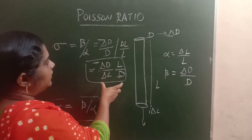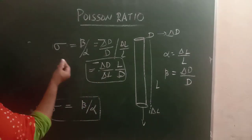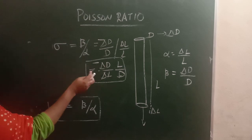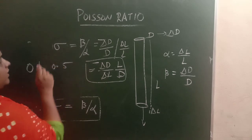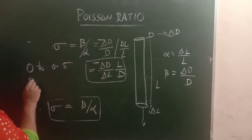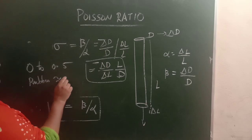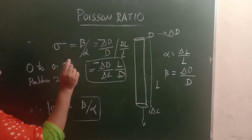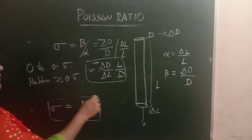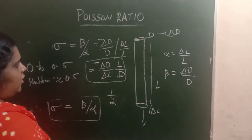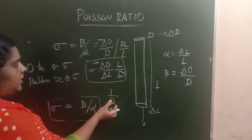In general, the Poisson's ratio varies from 0 to 0.5. For rubber-like materials, the Poisson's ratio is almost 0.5. A Poisson's ratio of 0.5 means 1 by 2, which means beta by alpha equals 1 by 2.